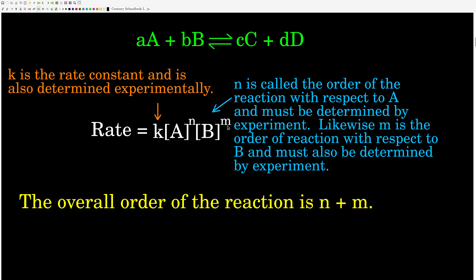N and M are integers and they must be determined by experiment. K is called the rate constant, and that also has to be determined by experiment. This is the form of the rate law for a chemical reaction.